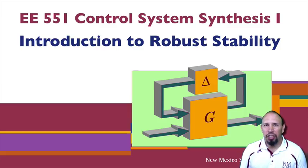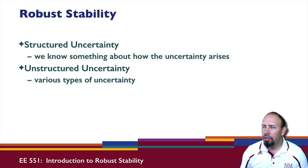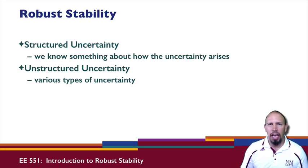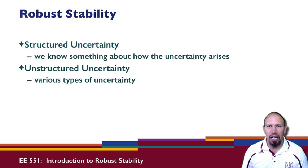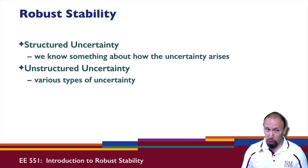In this lecture we're talking about an introduction to robust stability. The concept of robustness has to do with the fact that there is uncertainty that appears in a system. The question is, can the way a system is built or designed or controlled withstand that uncertainty? Or if you have uncertainty in the system, is it possible for the system to go unstable?